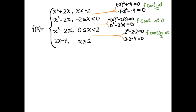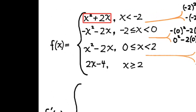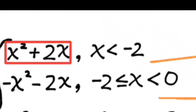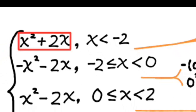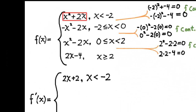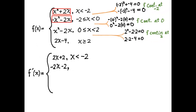Now let's compute the derivative f prime of x. That's also a piecewise function. The first piece is found by differentiating x squared plus 2x and I get 2x plus 2, which applies on the same subdomain as x squared plus 2x: x is less than negative 2. Next, I differentiate the next part and I get negative 2x minus 2, which applies in the same subdomain.